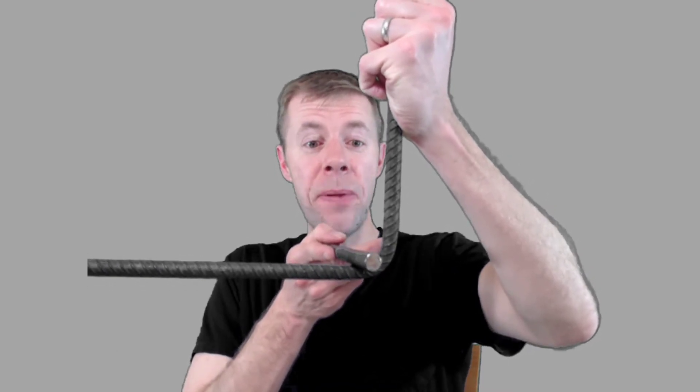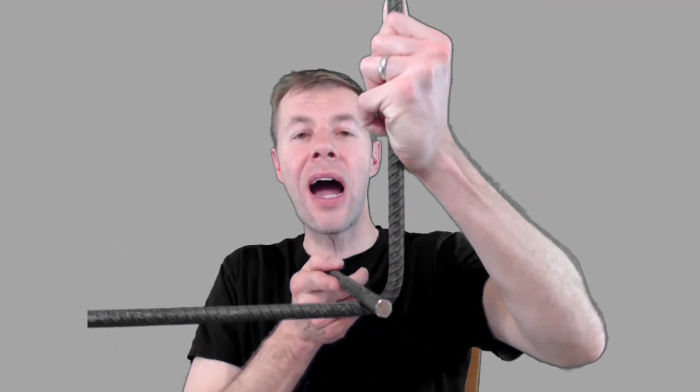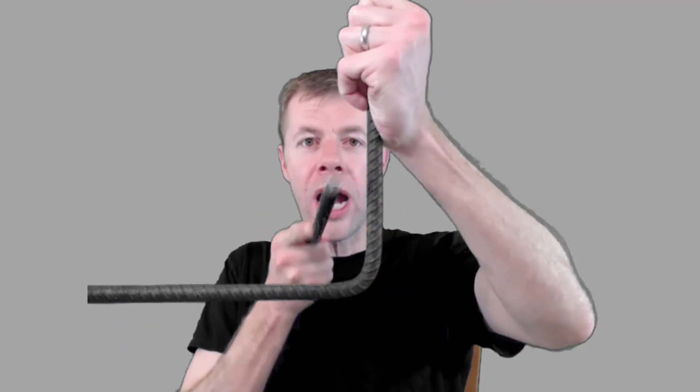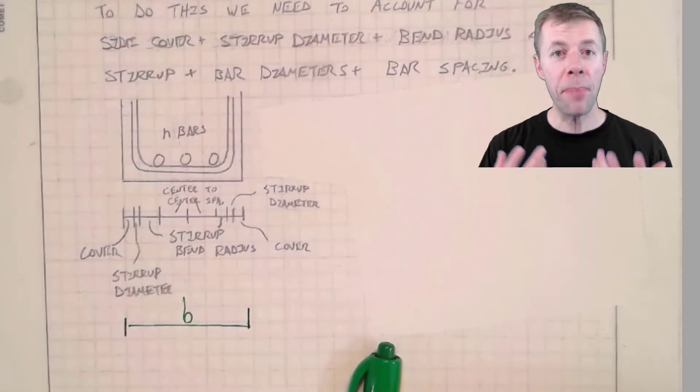And that is important to take into account. You have to know how people actually build things. And that radius right there is about two times the diameter of the stirrup. Two times the diameter of that stirrup. That is what the bend radius is. Back to it.